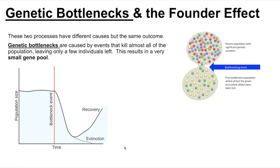Genetic bottlenecks and the founder effect have different causes but the same outcome: a reduced gene pool. Genetic bottlenecks are caused by events — such as natural disasters — that kill almost all of the population, leaving very few survivors. The original gene pool may have had many different alleles, but by chance the survivors carry only a subset. In this example, only the green and yellow individuals survived, resulting in very few different alleles remaining, so the gene pool has significantly decreased.